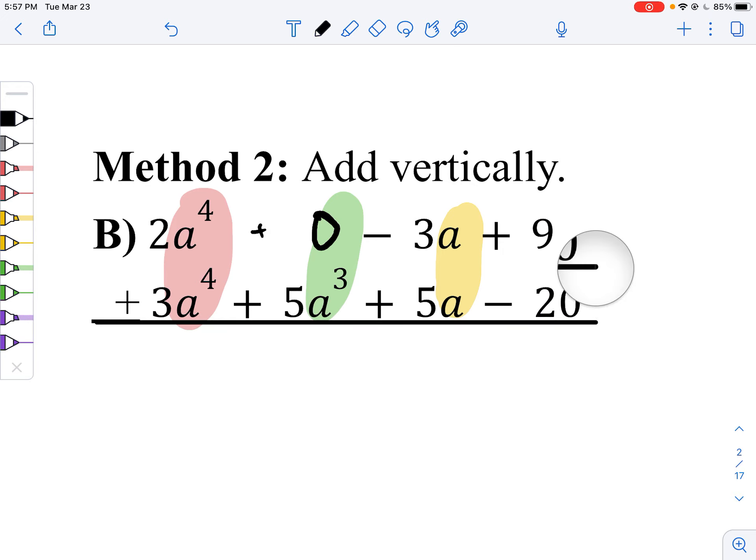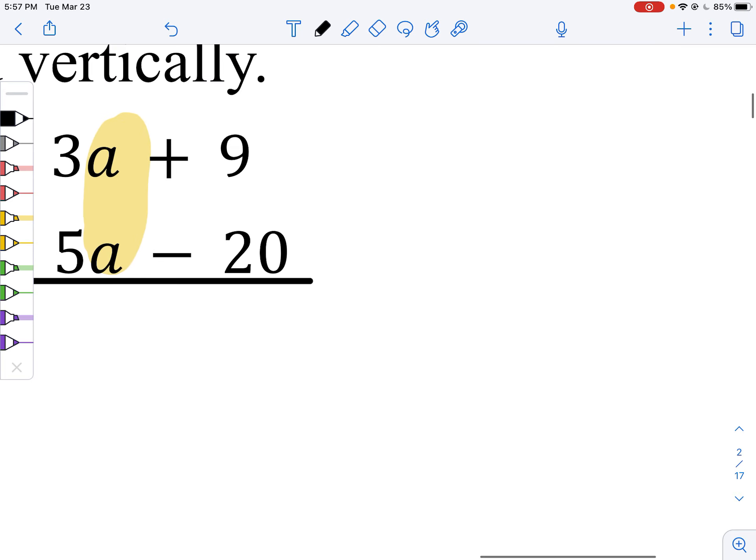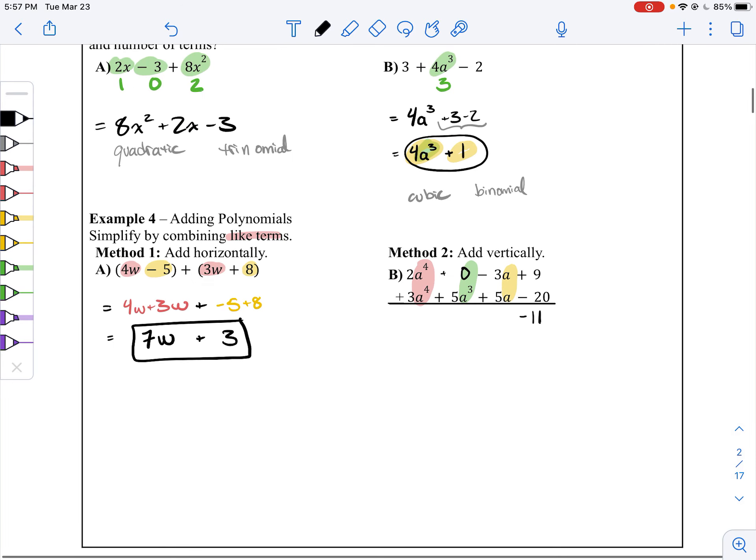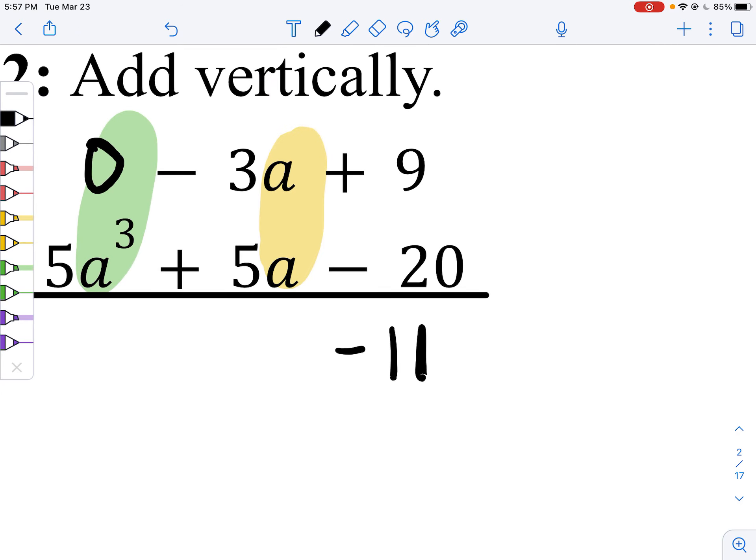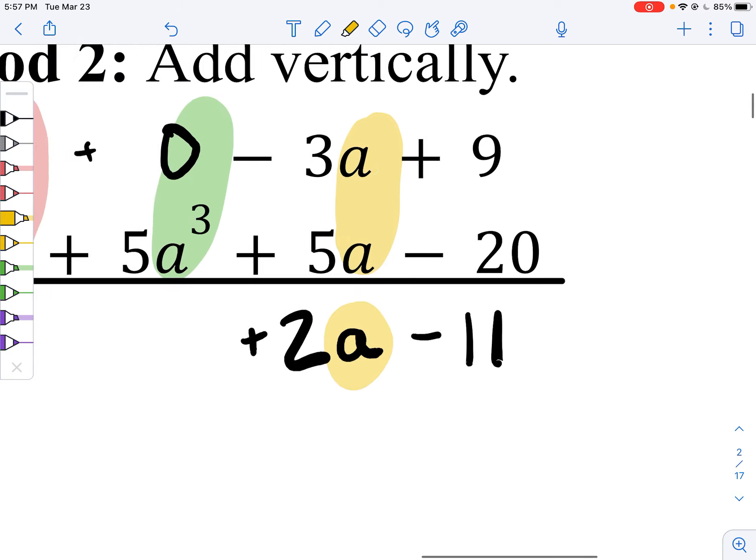And now we throw back to fourth grade, and we just straight add them. 9 minus 20 is negative 11. Negative 3 plus 5 is 2, positive 2, so that's 2a.